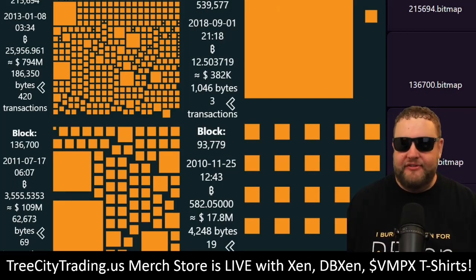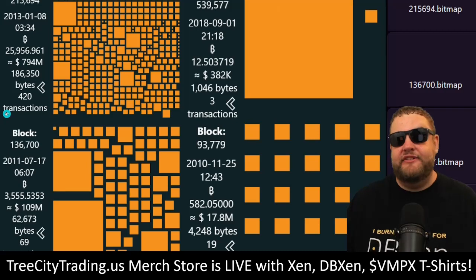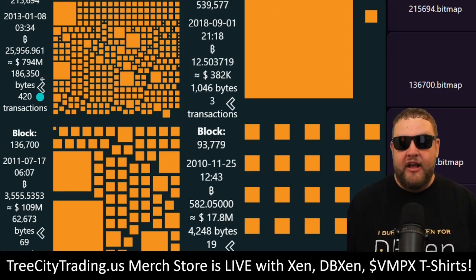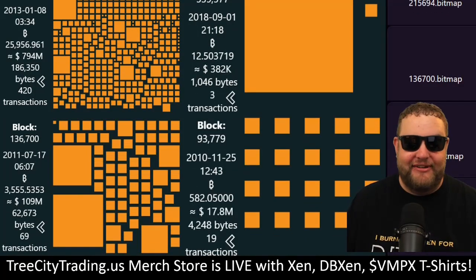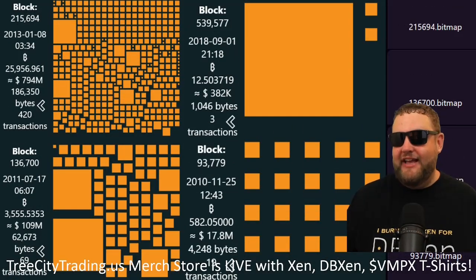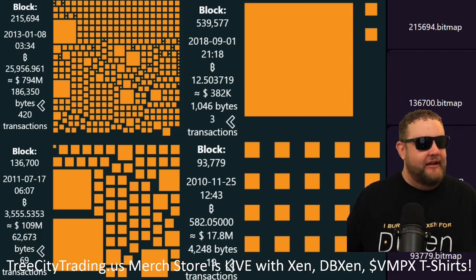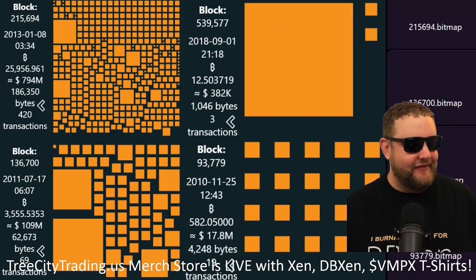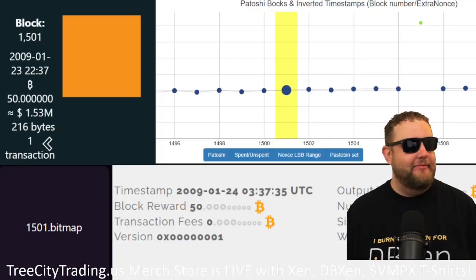Another way to think about bitmaps is the types of transactions or different data within the actual blocks. For example, block 215694, inscribed in January 2013, has exactly 420 transactions — there are only so many blocks with 420 transactions, so anyone owning this block could be considered having access to a secret 420 club. Block 136700 has 69 transactions, another infamous crypto number. Block 539577 only has three transactions but looks cool — one really big transaction and two small ones, kind of like a sideways emoji or piece of art. And sub-100,000 block 93779 has similarly sized transactions, a type of block actually called a Mondrian where the blocks are nicely formed in an artistic manner.